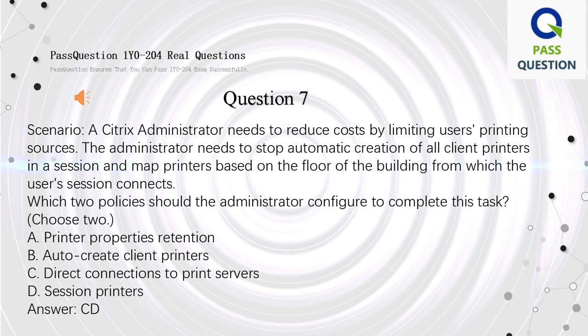Question 7. Scenario: A Citrix Administrator needs to reduce costs by limiting users' printing sources. The administrator needs to stop automatic creation of all client printers in a session and map printers based on the floor of the building from which the user's session connects. Which two policies should the administrator configure? Choose two. A. Printer Properties Retention. B. Auto-Create Client Printers. C. Direct Connections to Print Servers. D. Session Printers. Answer: C, D.